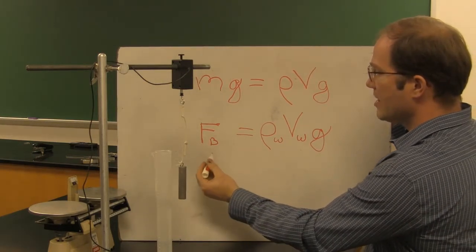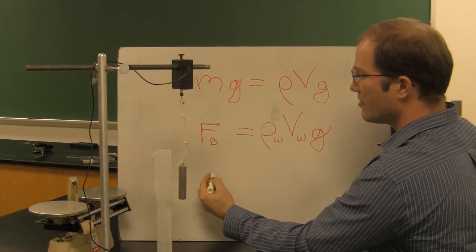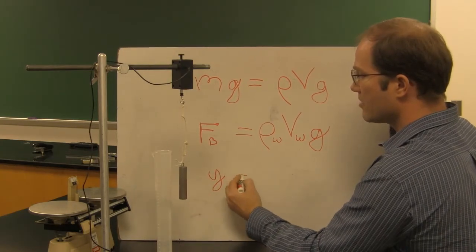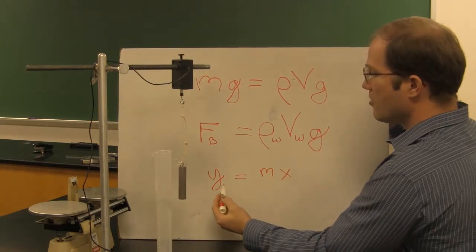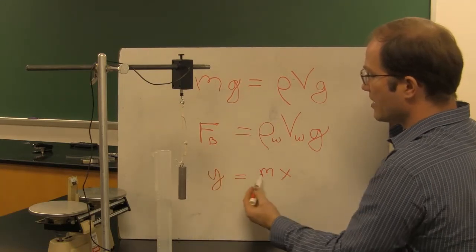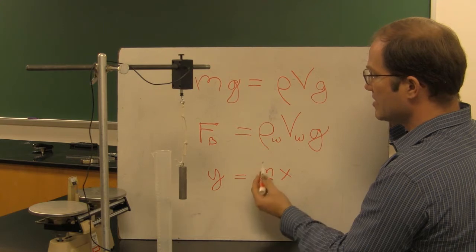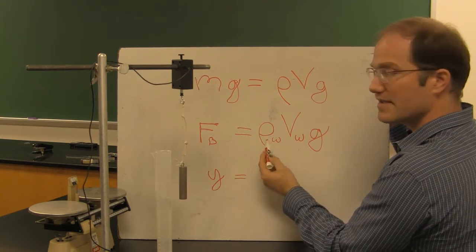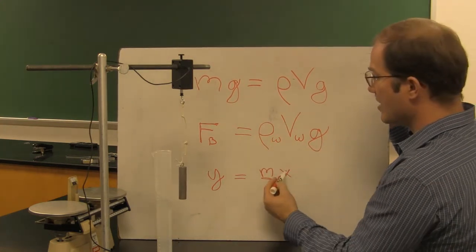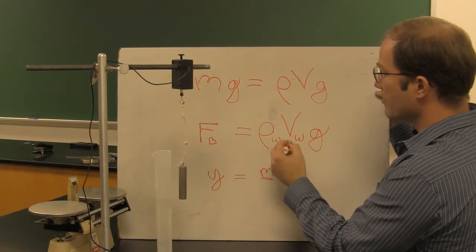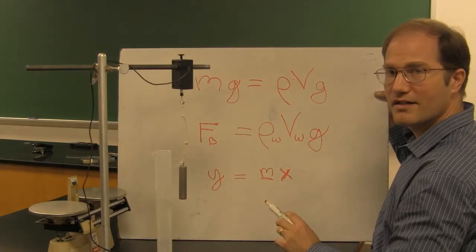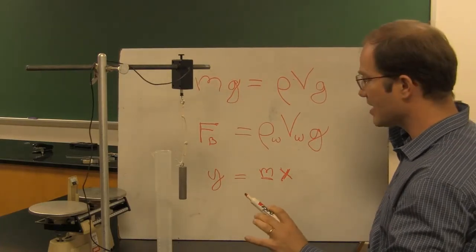So you have a linear equation in the form of y equals mx, where buoyant force is y, m (the slope) is equal to the product of density and gravity, and then x is this other variable here, the volume of water that's been displaced.